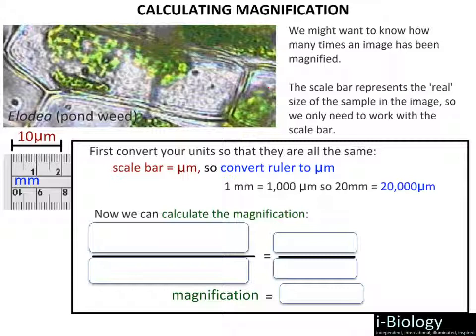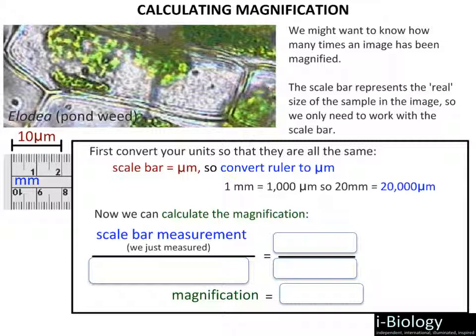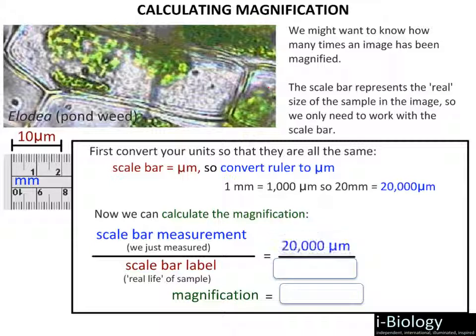When we do our magnification, the equation we use is: magnification equals image divided by actual. Our scale bar measurement is our image, and the label on the scale bar — the actual size that distance represents — is our actual. So we would take 20,000 micrometers and divide it by the 10 micrometers that the scale bar is equivalent to, giving us a magnification of 2000 times, written as 2000X.